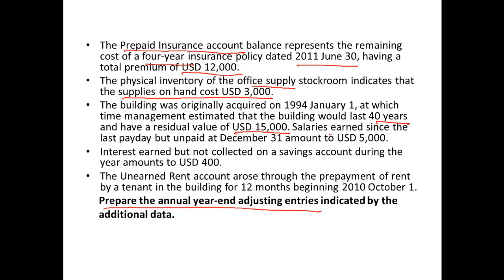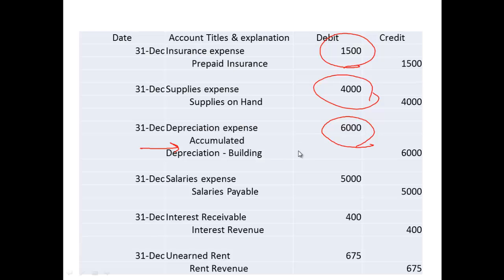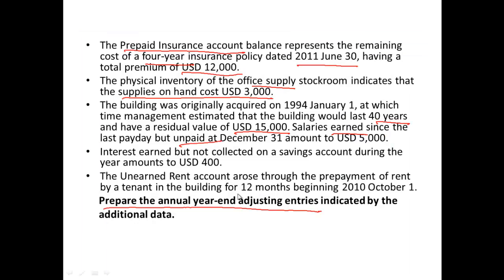Next, salaries earned since the last payday but unpaid — these salaries have been earned but not yet paid in this period, so we need to book them as an expense. We debit salaries expense and credit salaries payable for $5,000.